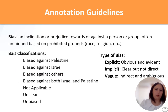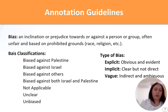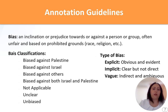Our guidelines for bias: we used the bias classifications provided by the Shared Task Organizers, but we added a type of bias. If the post is classified as biased — either against Palestine, against Israel, against other, or against both — it is either explicit bias, implicit bias, or vague.